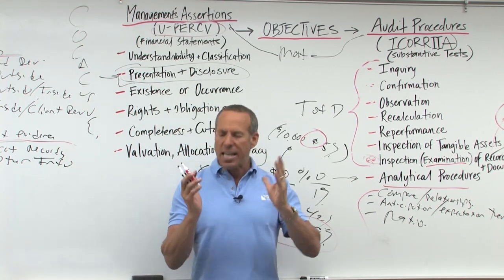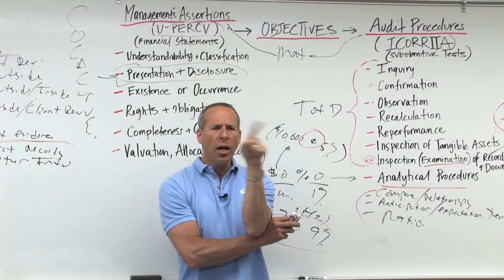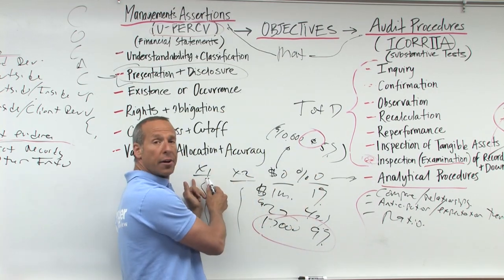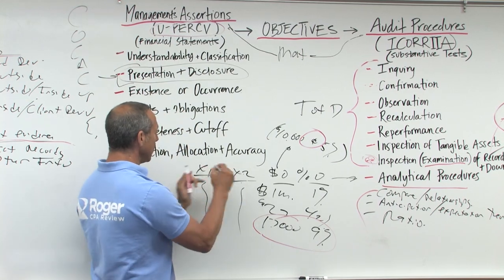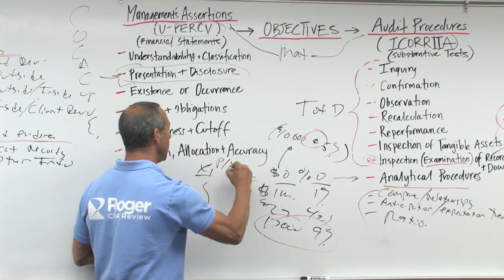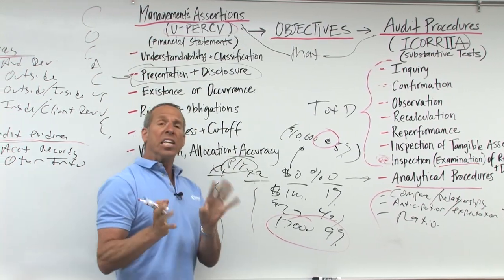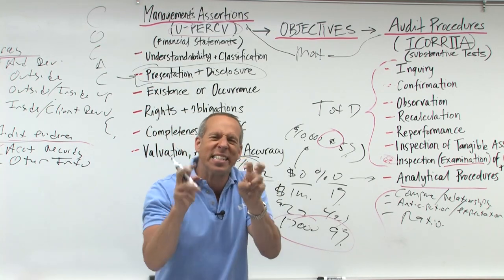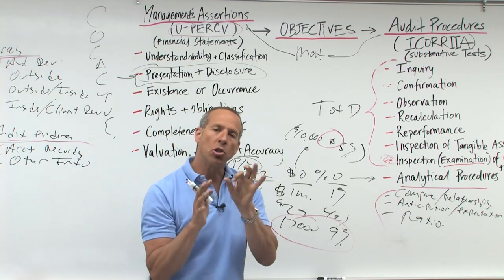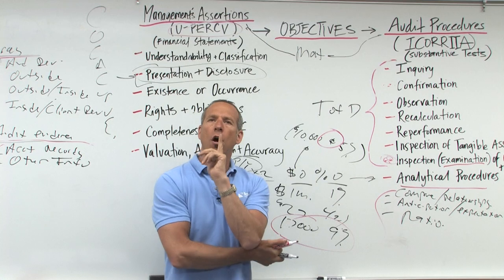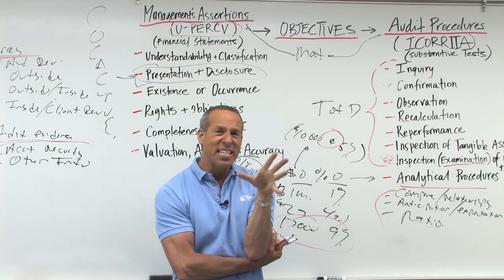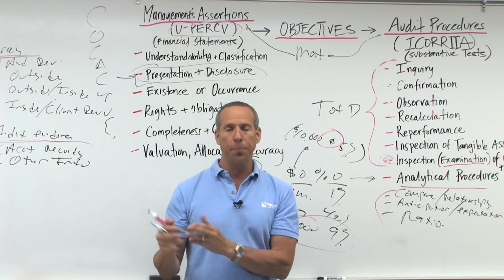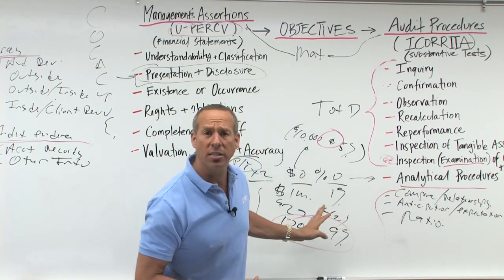So when planning the audit, you sit down and look at the changes — current year versus prior year. This change is bigger than we expected, bigger than we anticipated. So we need to go back and ask: is that change reasonable, or could there be a mistake? At the end of the audit you do the same thing.